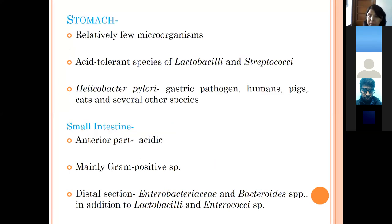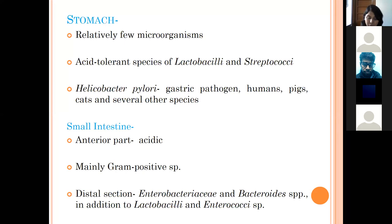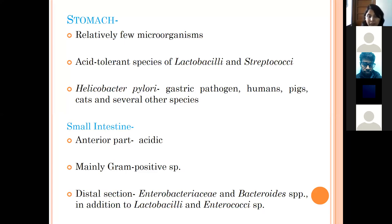In the stomach, relatively few microorganisms are present because of its acidic environment. Hydrochloric acid reduces the pH to nearly 2, and this acidic environment functions as a microbiological barrier against entry of foreign bacteria into the intestinal tract. However, acid-tolerant bacteria like Lactobacilli and Streptobacilli can colonize this organ. A gastric pathogen, Helicobacter pylori, is also present in the stomach and has been isolated from humans, pigs, cats, and several other species.